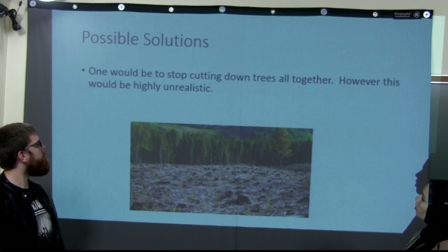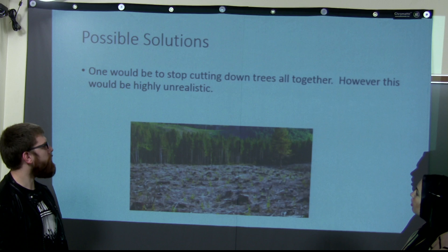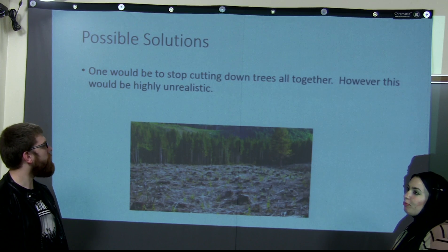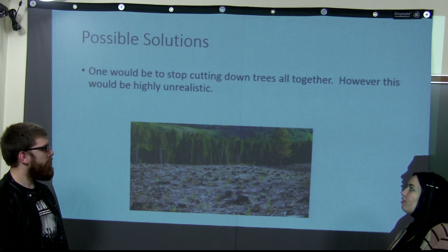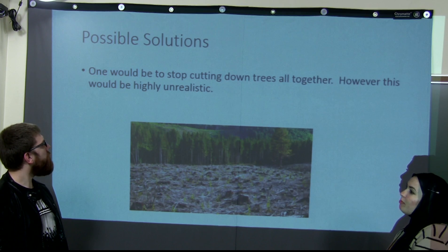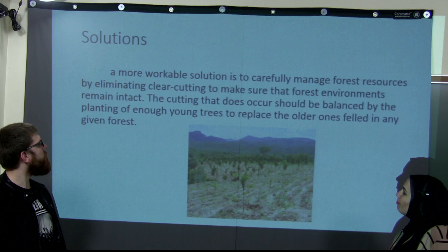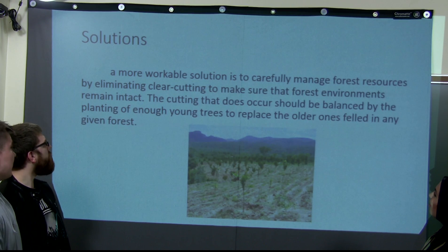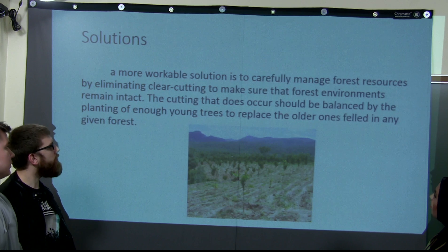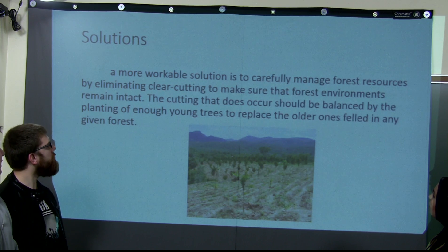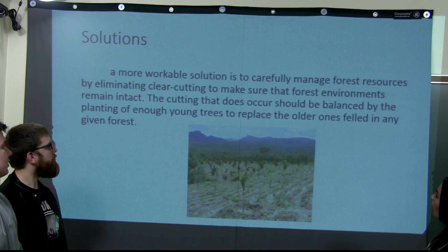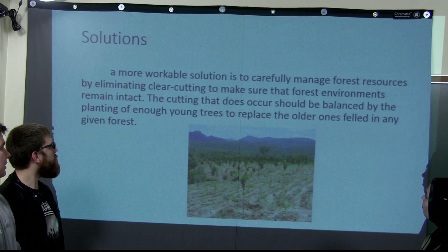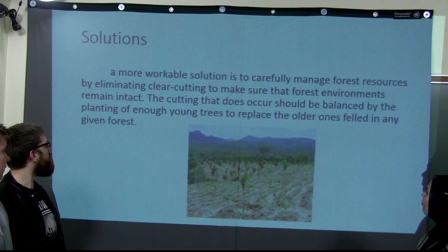Possible solutions: one would be to stop cutting down trees altogether; however, this would be highly unrealistic, as we need trees for human survival. A more workable solution is to carefully manage forest resources by eliminating clear cutting to ensure that forest environments remain intact. The cutting that does occur should be balanced by the planting of young trees to replace the older ones felled in any given forest.